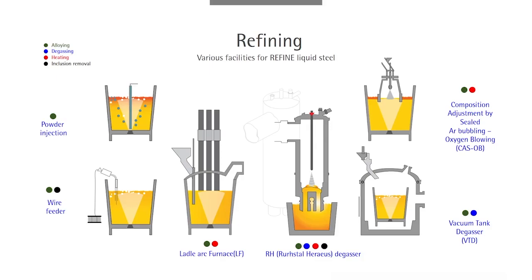In this slide, there are various types of equipment used for refining liquid steel. The purposes of refining include alloying liquid steel, degassing to remove nitrogen or hydrogen, and reheating — since temperature gradually decreases during secondary refining and must be maintained for casting. Non-metallic oxide inclusions formed during deoxidation also need to be removed or modified.